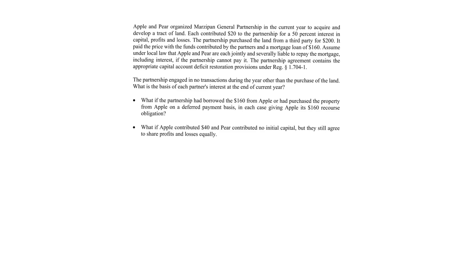What is the basis of each partner's interest at the end of the current year? We're focusing on this question first. We've got two partners, Apple and Pear. They each contribute $20 to the partnership and the partnership also borrows $160. So there's $20 from Apple, $20 from Pear, and $160 liability from a lender, totaling $200, which is then used to purchase land.